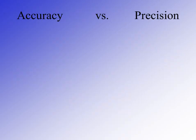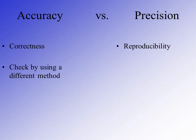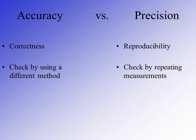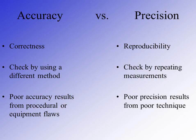When we make measurements, we often use the terms accuracy and precision. While they are related, they are not synonymous. Accuracy refers to the correctness of the value — how close it is to what it actually is or to some reference value. Precision speaks to the reproducibility of a given answer. Accuracy can be checked by using a different method or instrument, while precision can be checked by repeating your measurements. Poor accuracy tends to result from flaws in procedure or equipment, while poor precision typically results from poor technique on the user's part.